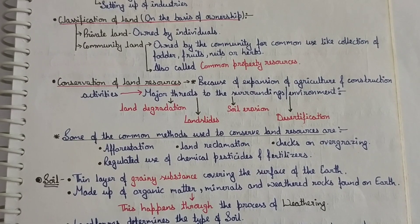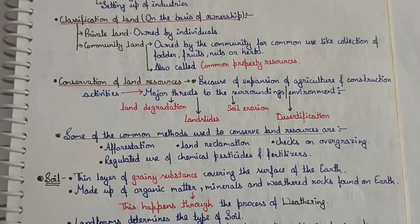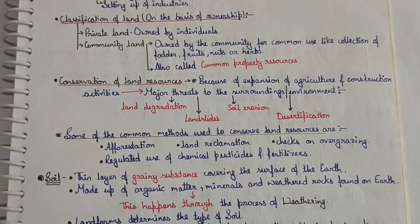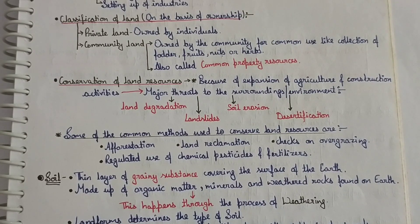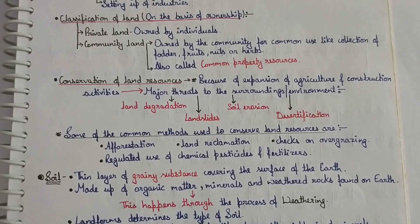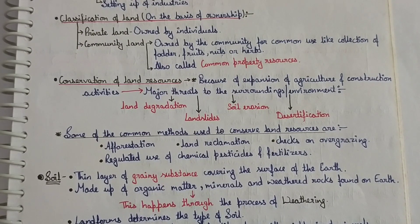Conservation of land resources. In the last class we discussed that land is a very important natural resource. Today in this class we will study the negative impacts of agriculture activities, construction activities, and factories and industry setup on the surrounding environment. Because of the expansion of agriculture and construction activities, there are major threats to the surroundings and environment.